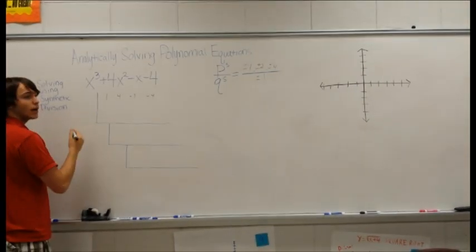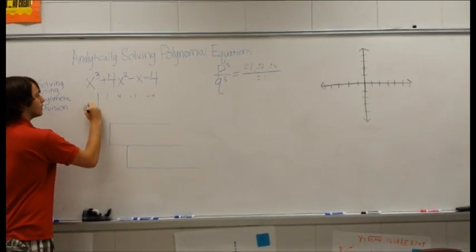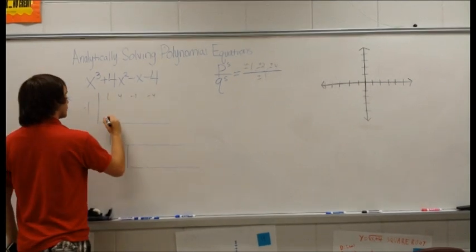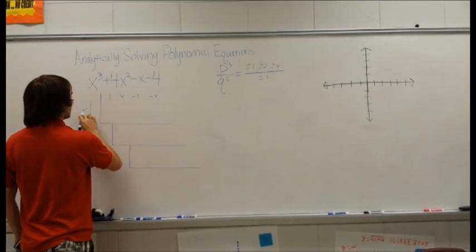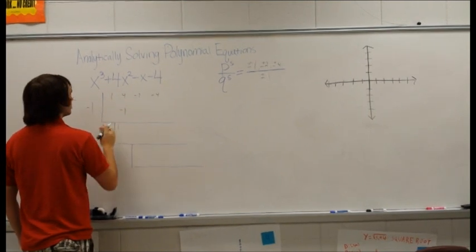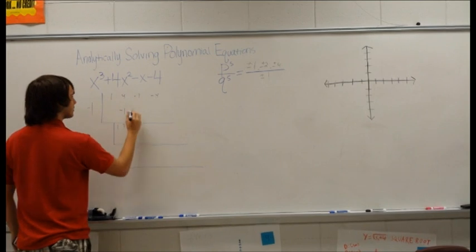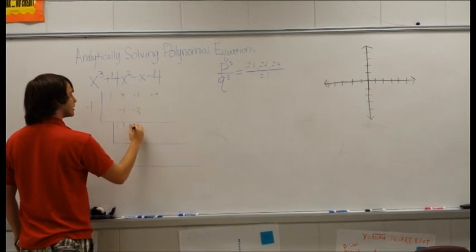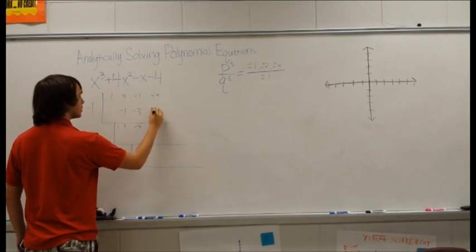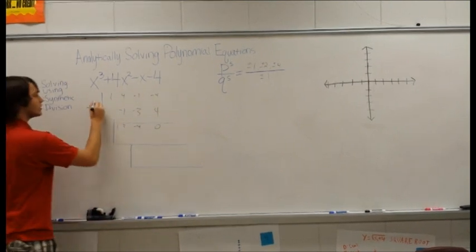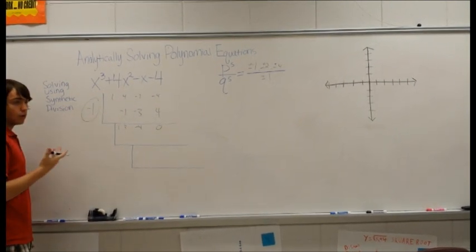So let's try one of these as -1. You bring down the 1. 1 times -1 is -1. Add 4, you get 3. Times -1 is -3. Plus -1 is -4. Times -1 is 4. So it's 0. So this is a factor, or a zero.